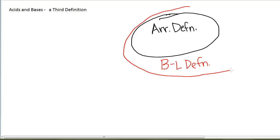The thing about the Bronsted-Lowry definition is it includes all of the acids and bases in this circle, which means that if we can define it as an Arrhenius acid or base, it is by default also a Bronsted-Lowry acid or base.